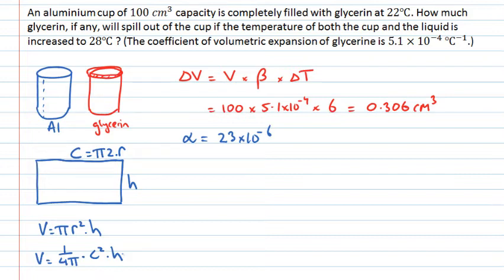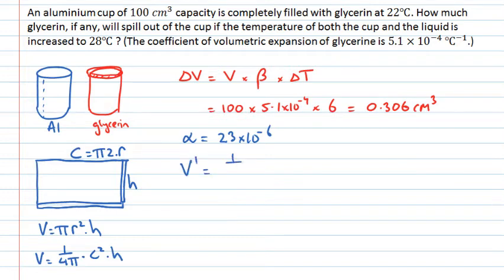The reason for this form is that when we heat the aluminium, using the linear coefficient of expansion, both the circumference and the height will change. The new volume V′ equals (1/4π) times the new circumference squared — which is (C + ΔC)² — multiplied by the new height (h + Δh).